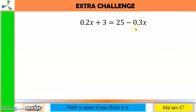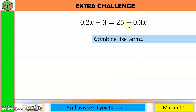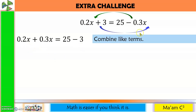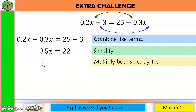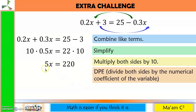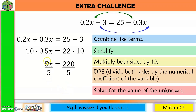Here we are given decimals. First, combine like terms: move minus 0.3x and positive 3 to the other sides — 0.2x plus 0.3x equals 25 minus 3. Simplifying: 0.5x equals 22. Since we have one decimal place, multiply both sides by 10: 5x equals 220. Applying DPE, divide both sides by 5: x equals 44.